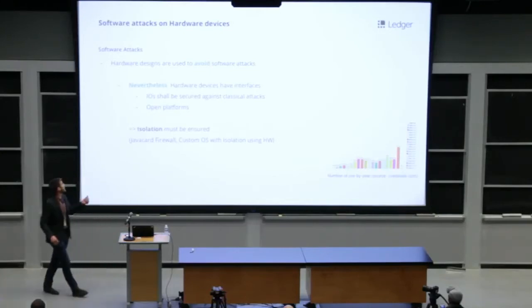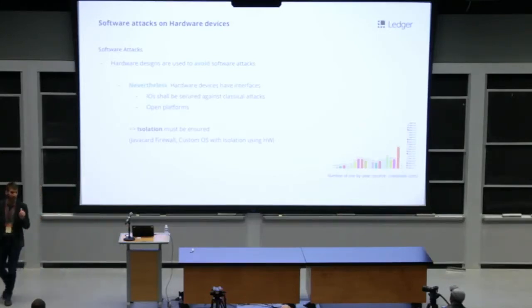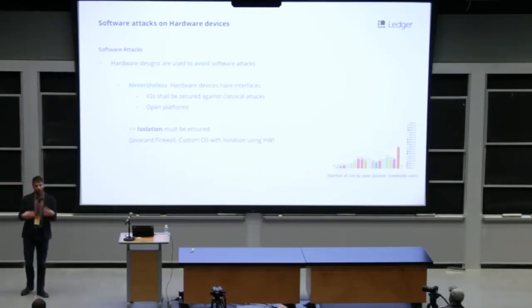First kind of attacks are software attacks. We design hardware to avoid software attacks, but even hardware designs have interfaces, IO. So when there are IO, there are potential software attack vectors like buffer overflow, null pointer dereferencing, and so on.